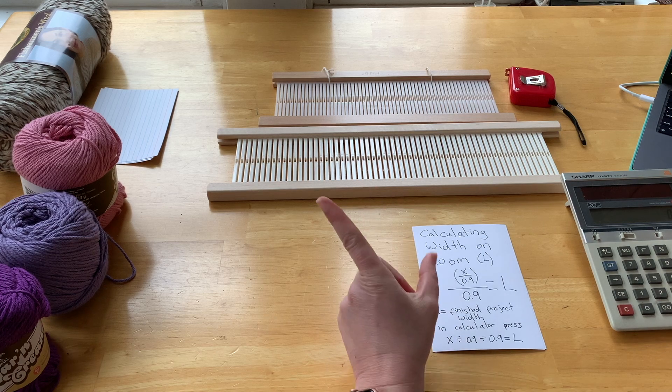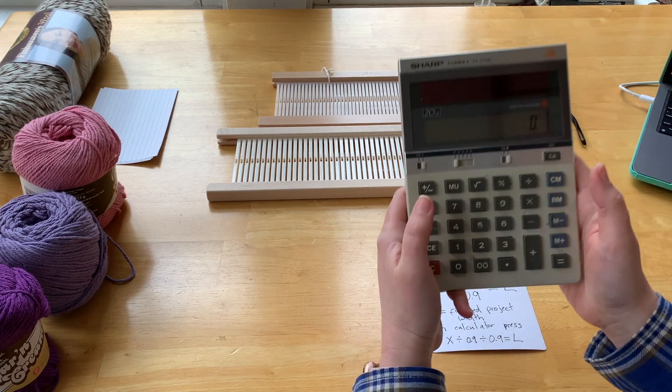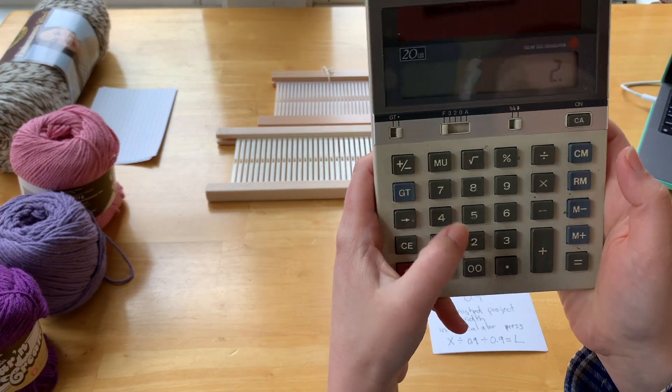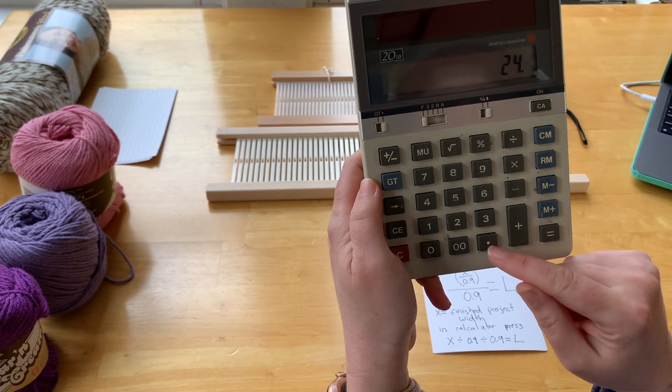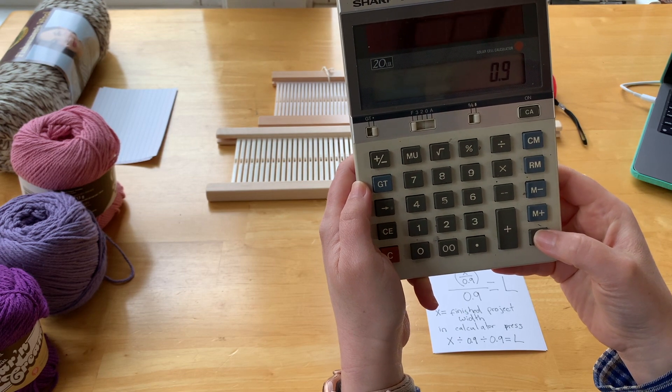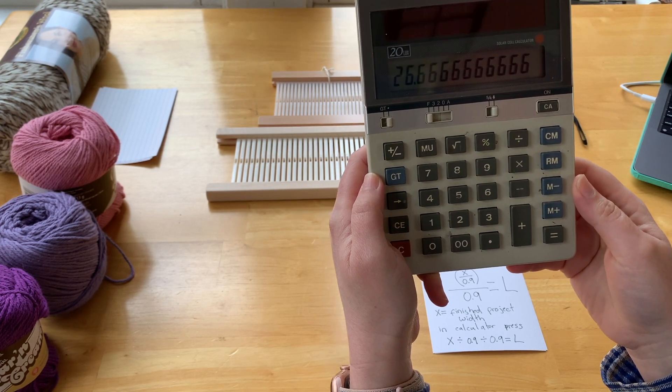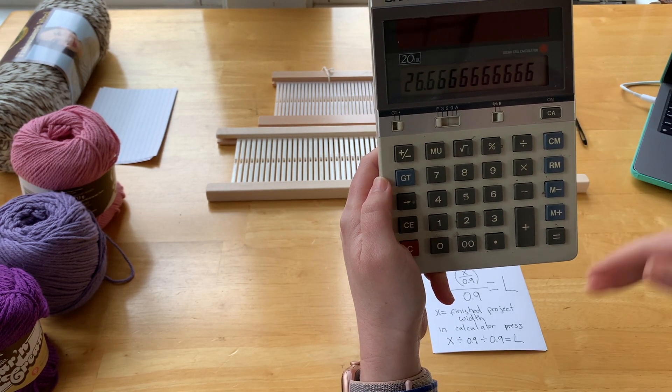So I want 24 inches, and I'm going to divide that by 0.9, and that is going to give me 26.666. Now I'm going to divide that by 0.9 again.